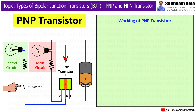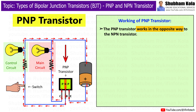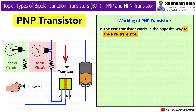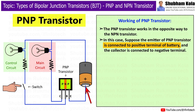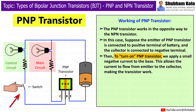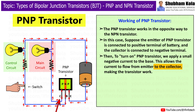The PNP transistor works in the opposite way to the NPN transistor. The emitter of the PNP transistor is connected to the positive terminal of the battery and the collector is connected to the negative terminal. To turn on the PNP transistor, we apply a small negative current to the base. This allows the current to flow from the emitter to the collector, making the transistor work.